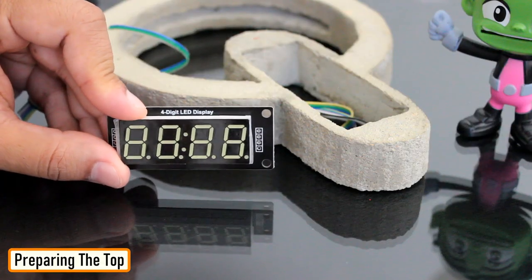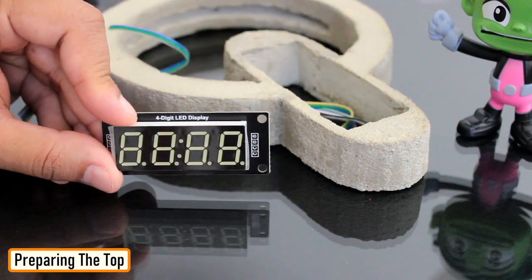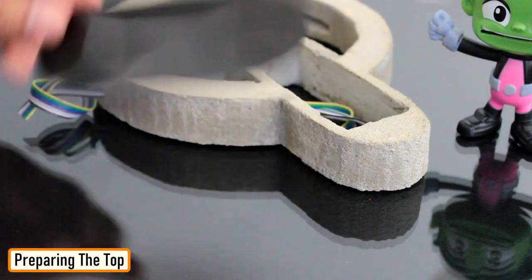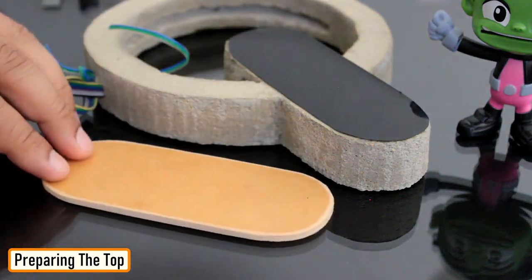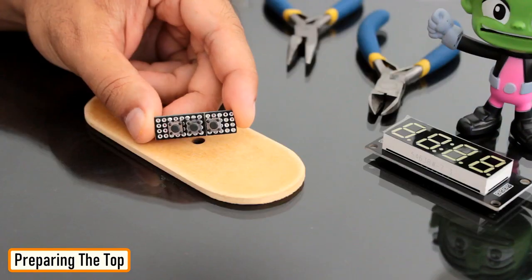Now let's start installing the electronic components to the top section of the clock. The four-digit LED clock module will sit inside this gap. I'll cover it using a black plastic film which I extracted from a wrapping paper. For the back, I'm using a compressed wood board. Based on my initial design, I'm going to make some holes in the board and install three push-button switches to it.